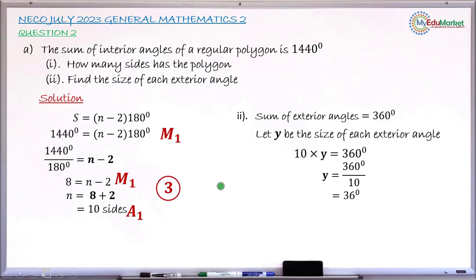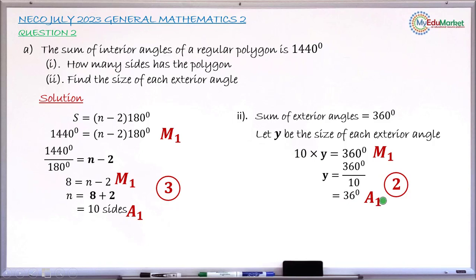For Roman 2, the first mark is a method mark for attempting to find the size of the exterior angle by multiplying the exterior angle by 10 — the number of exterior angles — and setting it equal to 360. The second mark is an accuracy mark for the correct answer of exactly 36 degrees. Roman 2 has a total of two marks.